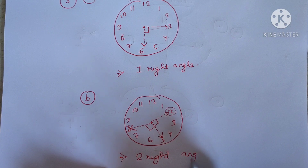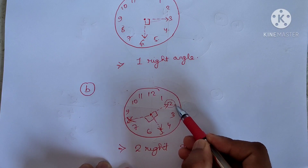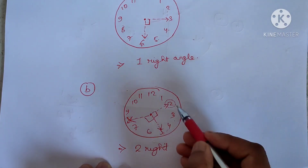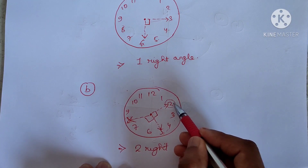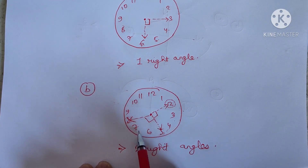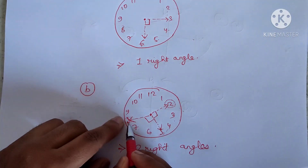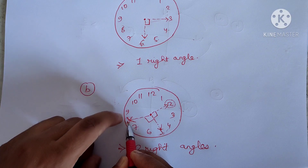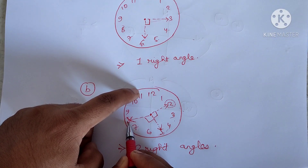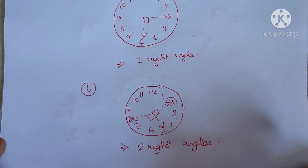The key rule is: the difference between each right angle turn is four positions. Starting from 2, count one, two, three, four — that is the first right angle. Now from 5, count one, two, three, four — that is the second right angle. If there were a third right angle, starting from 8, counting four would bring us to 11.